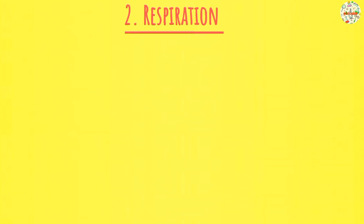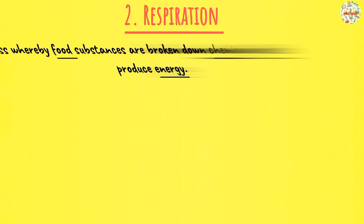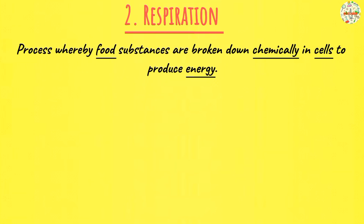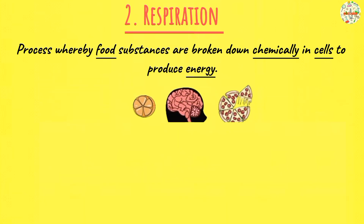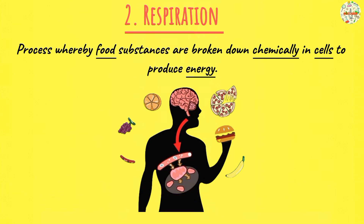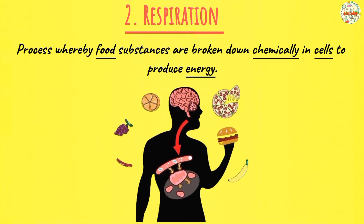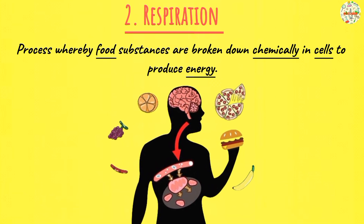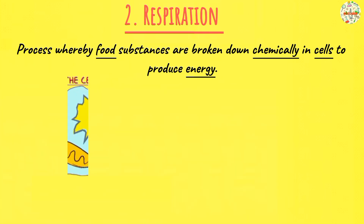Moving on to our second characteristic, and that is respiration. So you were introduced to respiration in primary. This is a process whereby living things break down food substances in order to obtain energy. In the case of nutrition, this is when they obtain and use the nutrients. In the case of respiration, the nutrients obtained from the food substances are broken down to release energy, and this process takes place within the cells.